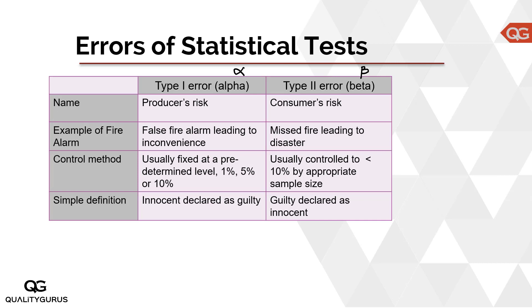How do we control these errors? For alpha (Type 1 error / producer's risk), there are usually fixed, predetermined levels: 1% (0.01), 5% (0.05), or 10% (0.10), decided beforehand as part of the sampling plan. For Type 2 error (beta), it is usually controlled by changing the sample size — increase the sample size and you will have less beta error.